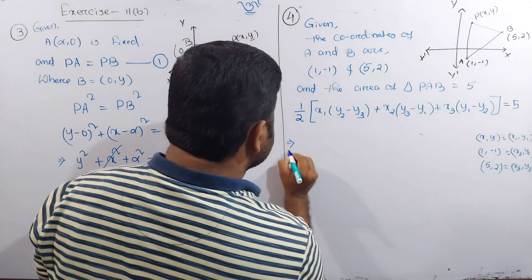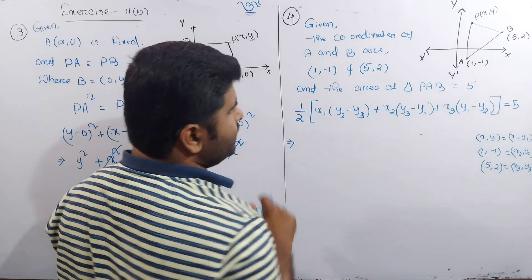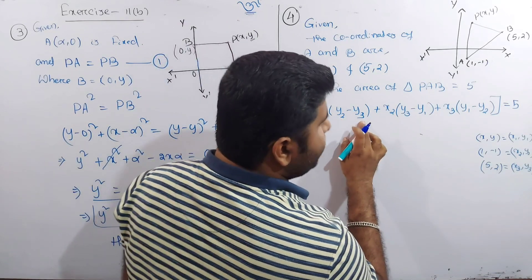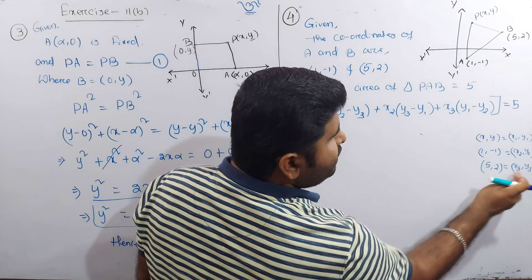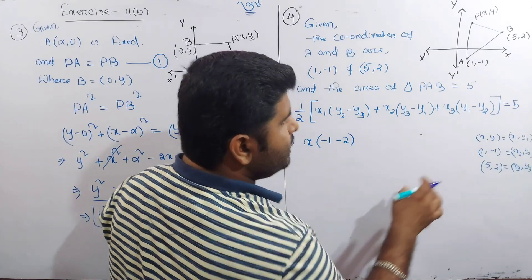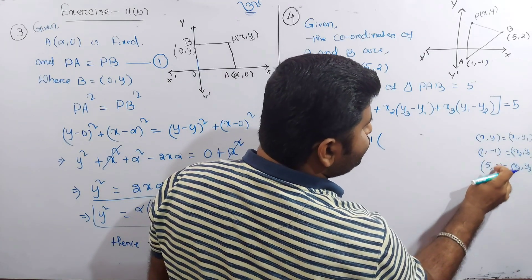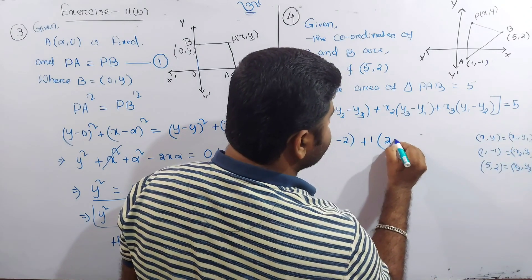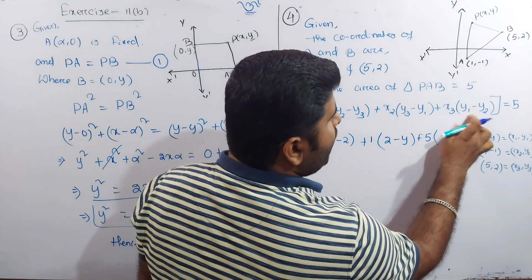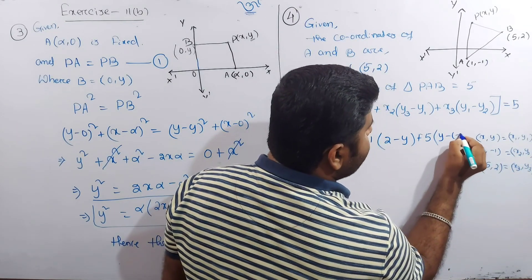Area equals half. x₁ = x, y₁ = y. x₁ into (y₂ − y₃): y₂ = −1, y₃ = 2. Plus x₂ = 1, into (y₃ − y₁) = (2 − y). Plus x₃ = 5, into (y₁ − y₂) = (y − (−1)) = (y + 1). And the area equals 5.